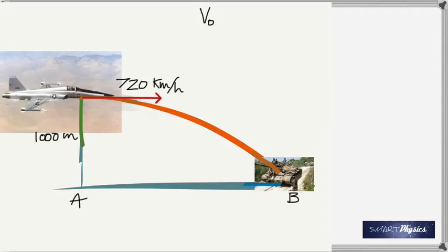Therefore, its initial vertical velocity V0y is zero. That's the most important point. Acceleration is 9.8 meters per second squared. We know delta y is 1000 meters, and we're trying to find out the time that it takes.